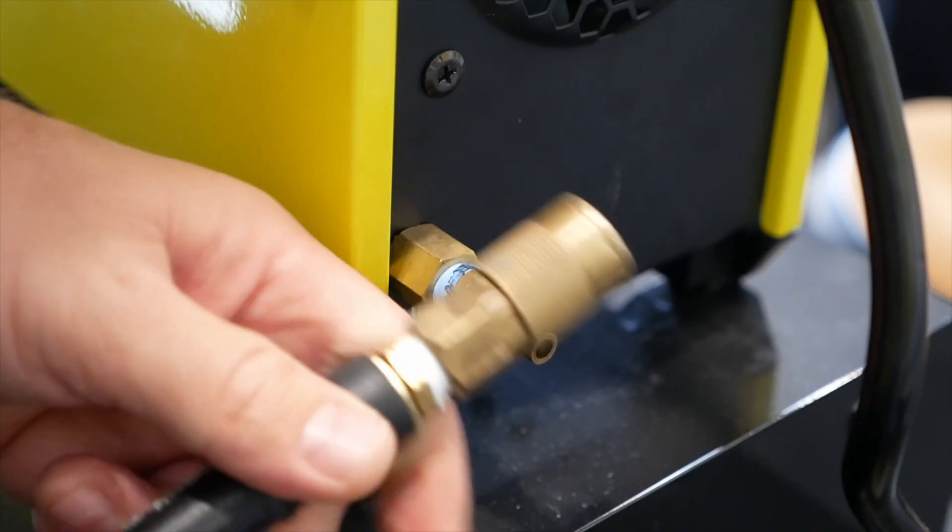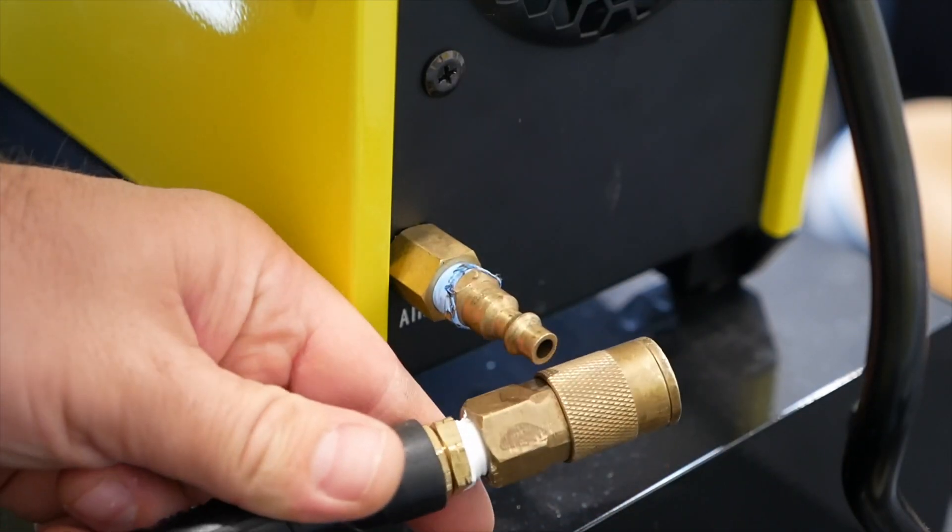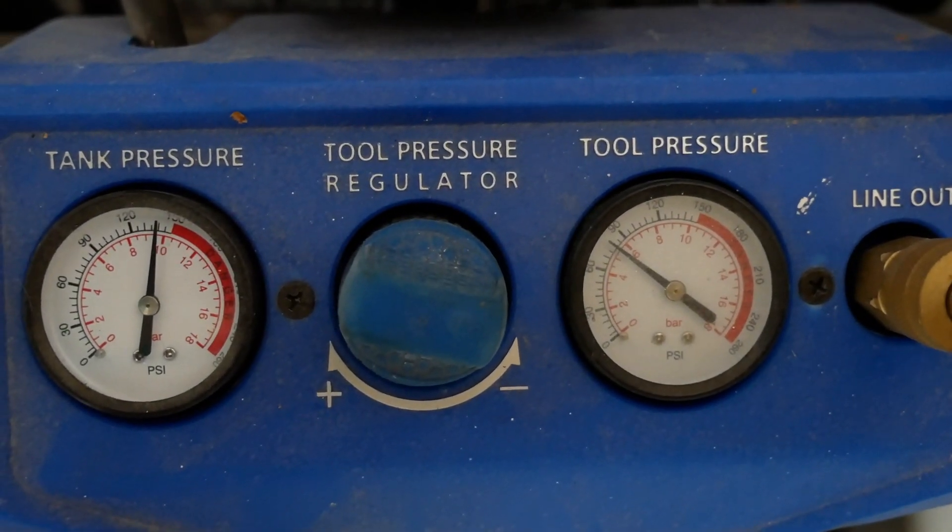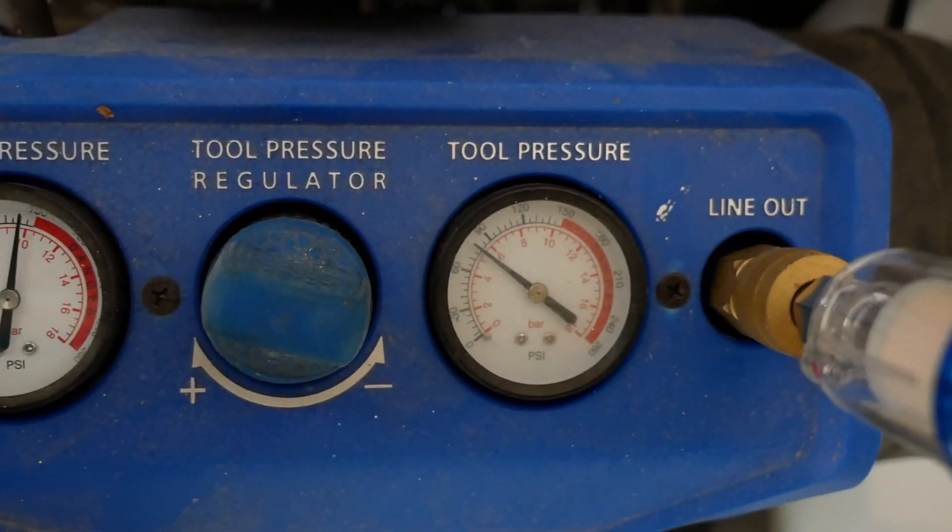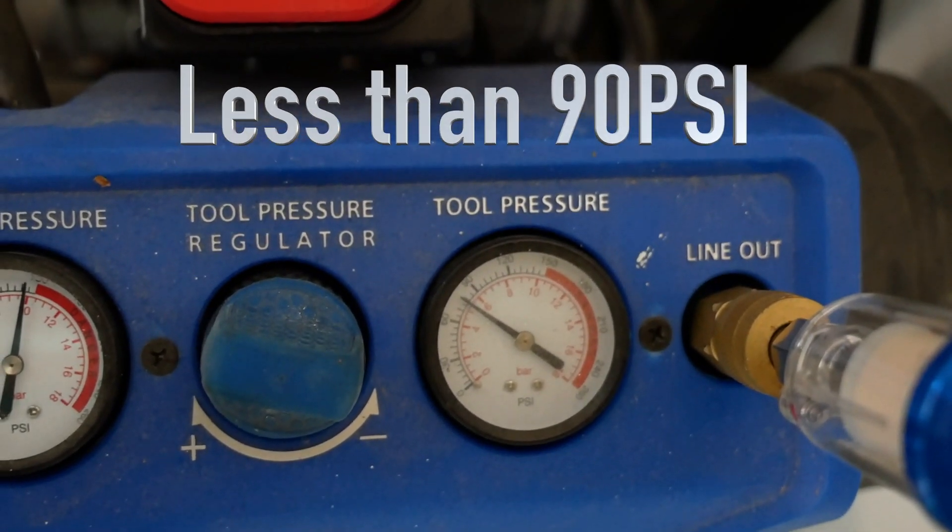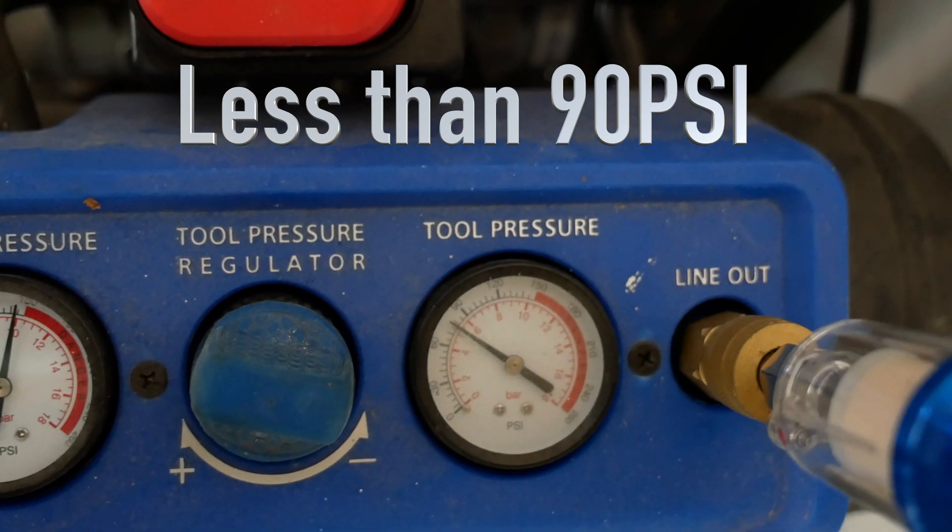Now I'll install the other end of the coupler so the air is ready to flow into the machine. Go ahead and turn your air compressor on. Let's get air pressure to the plasma cutter. One thing to note is that the output pressure on your air compressor should always be lower than 90 psi.